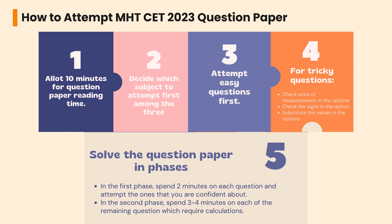First, you need to allot 10 minutes for question paper reading time. Then you can decide which subject to attempt first among the three. After that, you need to attempt easy questions first.